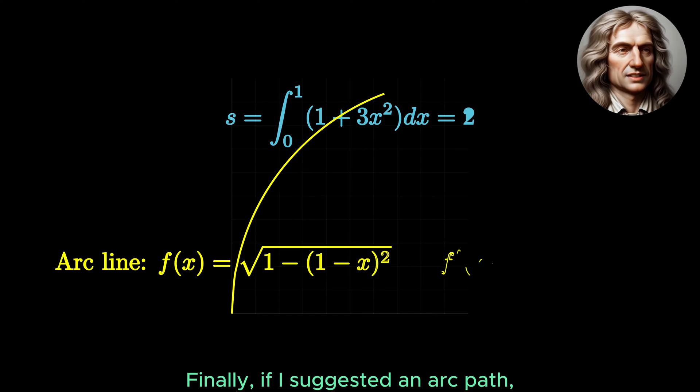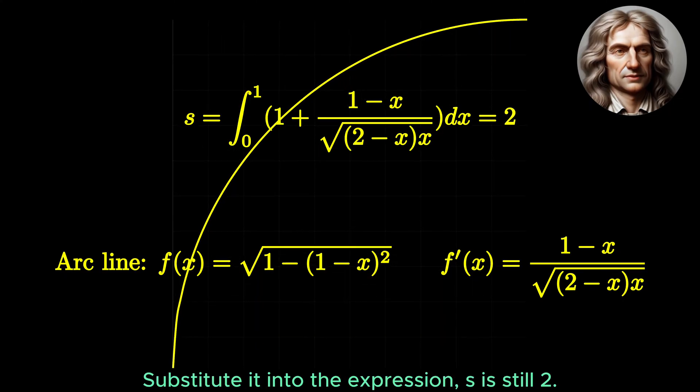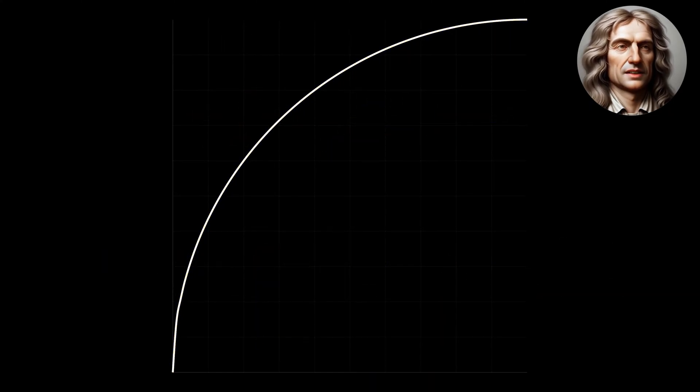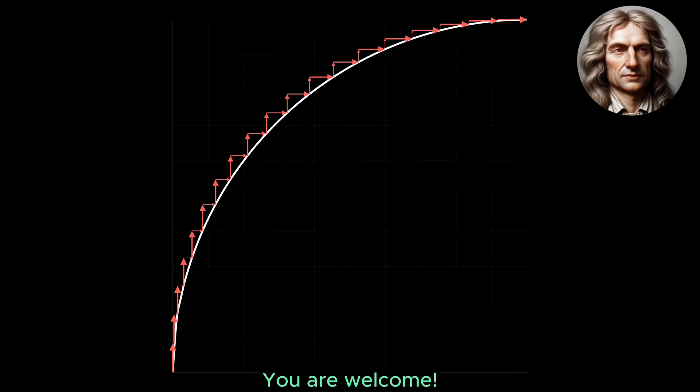Finally, if I suggested an arc path, then f(x) equals square root of 1 minus (x minus 1) squared. Substitute it into the expression, s is still 2. This is the famous pi equals to 4 paradox. You are welcome.